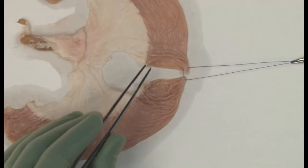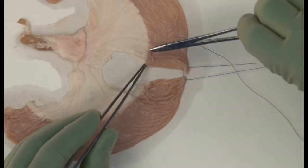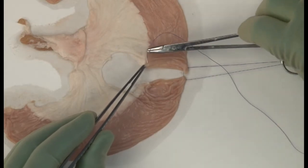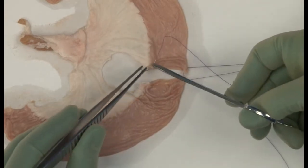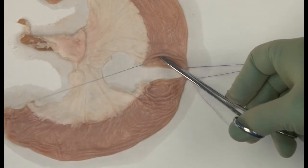Now insert a similar stay suture on the mesenteric border, pulling it through gently, and again placing it untied in a hemostat.